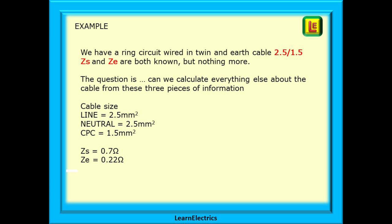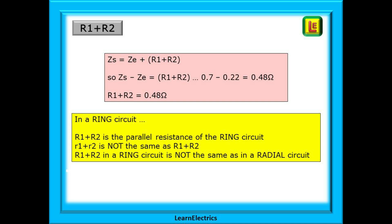The cable size, the Zs and the Ze. We should know that Zs is Ze plus R1 plus R2. And we can rearrange these to get just R1 plus R2. So Zs minus Ze will give us R1 plus R2.